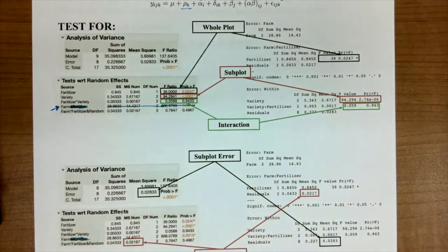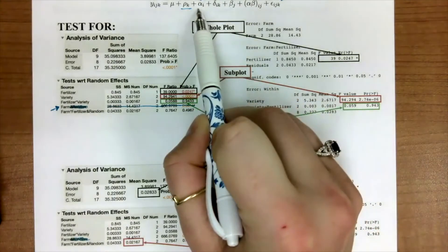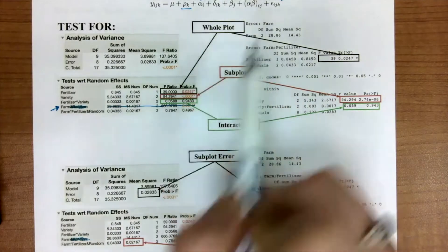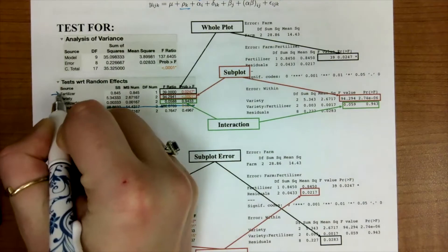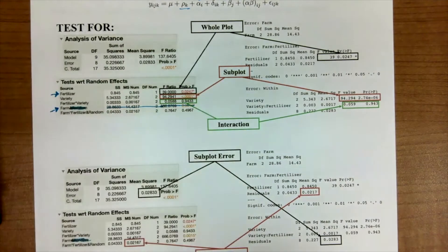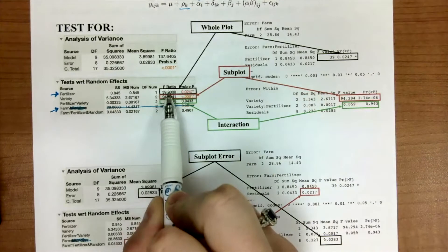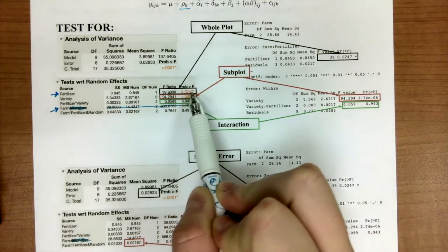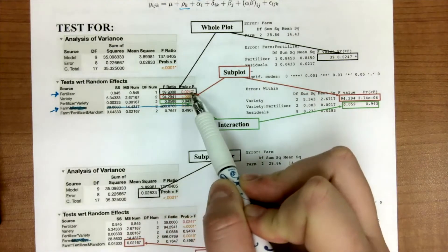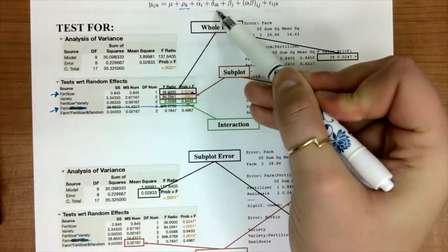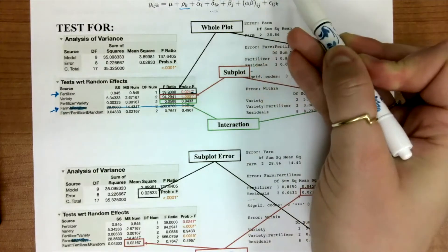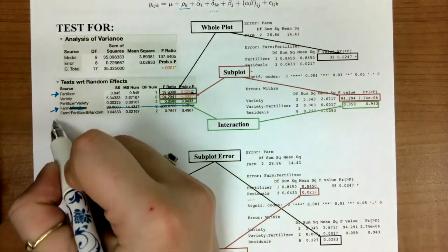Our next term we want to figure out is our alpha, our whole plot. We know in our case our whole plot term is our fertilizer, so we're going to look here. In order to test, we're going to be looking at this F ratio and this p-value when we're testing at the whole plot level.